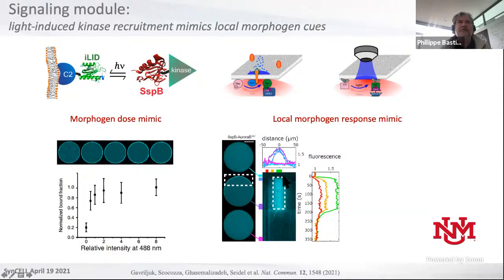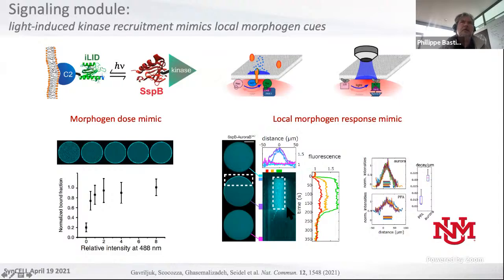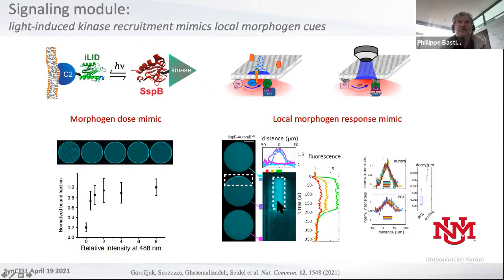What was very interesting is that it was extremely localized. If you use another protein attached to the sspB system, the gradients are way more shallow. Aurora kinase is actually self-associating, thereby slowing down diffusion. The other important point is that you can switch it on and switch it back off — it's reversible when you switch off the light.